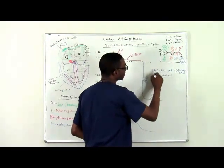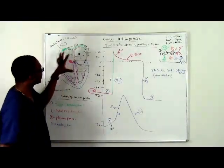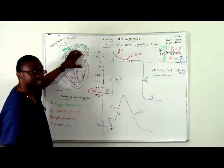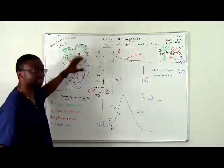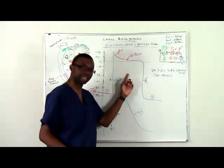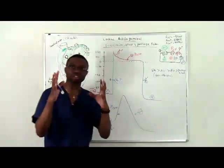When the SA node depolarizes, it causes depolarization of the myocytes, spreading into the myocytes. When the myocytes receive this, they're all going to undergo this pathway, depolarize, and then contract.